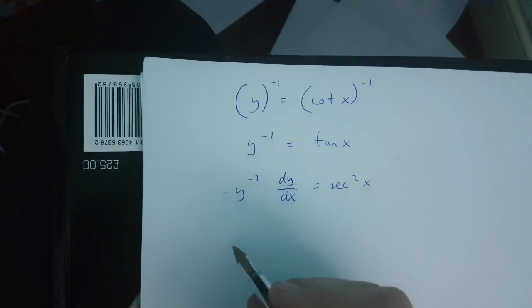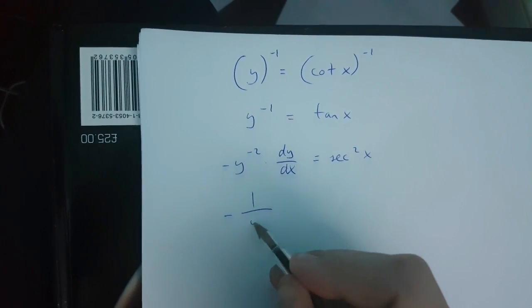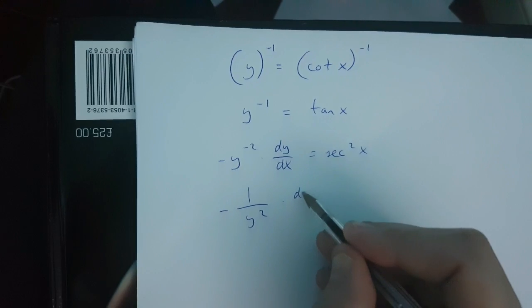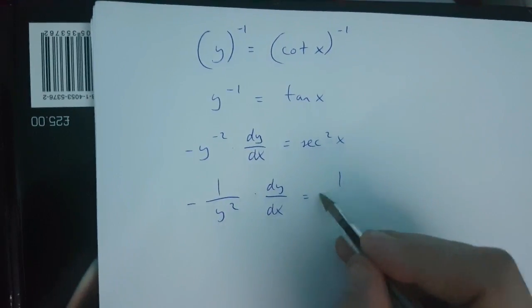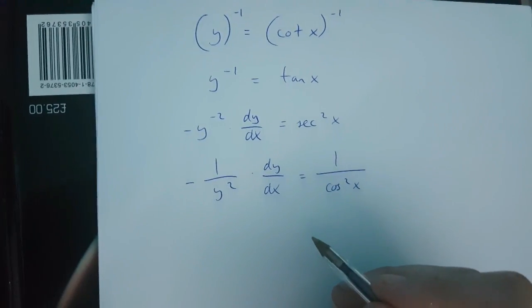Now this is in fact equal to minus 1 over y squared times dy over dx is equal to 1 over cos x squared.